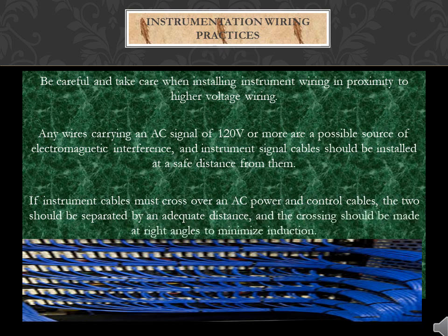Be careful when installing instrument wiring in proximity to higher voltage wiring. Any wires carrying an AC signal of 120V or more are a possible source of electromagnetic interference, and instrument signal cables should be installed at a safe distance from them. If instrument cables must cross over AC power and control cables, the two should be separated by an adequate distance and the crossing should be made at right angles to minimize induction.